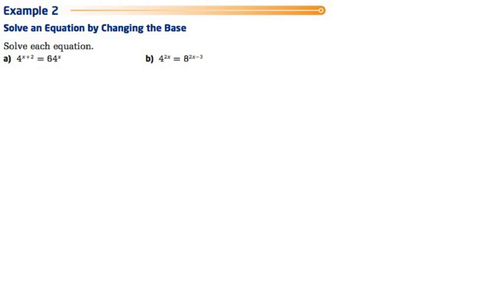In example 2, we're going to combine what we did with example 1, along with actually solving the equation. So looking at A, we have 4 and 64 as the bases. We need to change those into the same base.